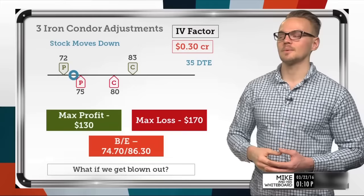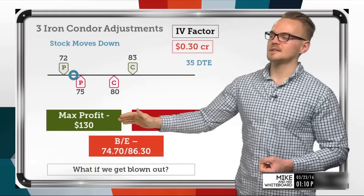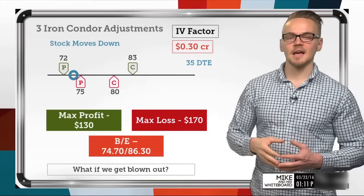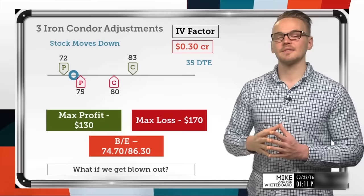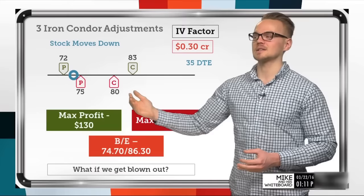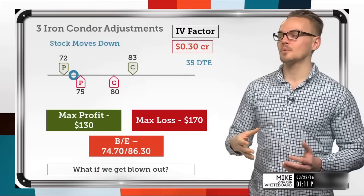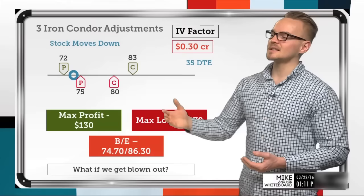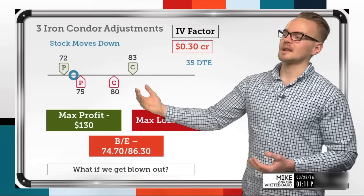If I collected a dollar originally and moved the call spread down for 30 cents, my new max profit is $1.30. Unlike the iron fly example, my max profit can be realized if the stock price is anywhere between 75 and 80 at expiration, because that allows all options to expire worthless. Since I'm only collecting 30 cents, my max loss doesn't come down as much as in the previous example, but I still have a nice wide range of profitability — which may make this a better option than immediately creating an iron fly.